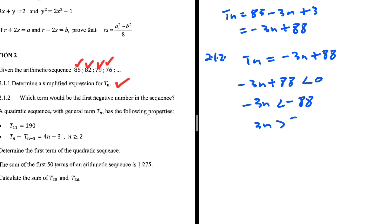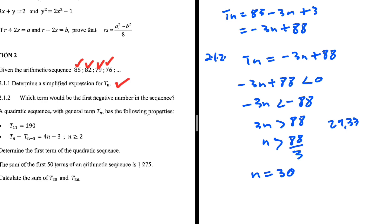From -3n < -88, we divide both sides by -1, which flips the inequality: 3n > 88. Dividing by 3 gives n > 88/3 ≈ 29.33. Since n must be a whole number (it's a position), we cannot use 29.33 directly.